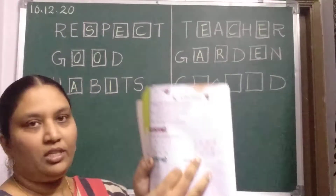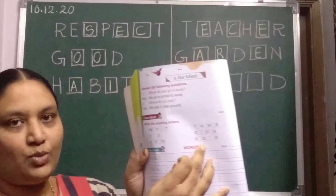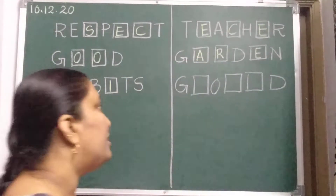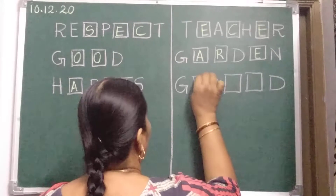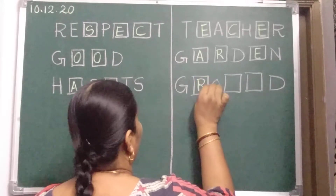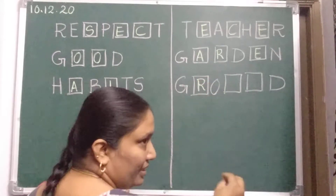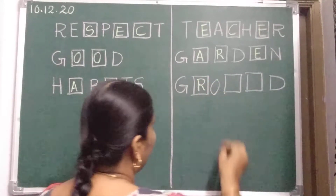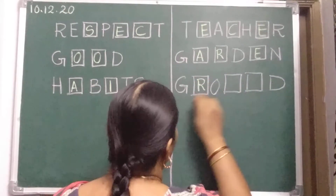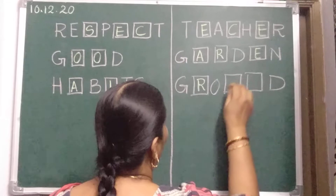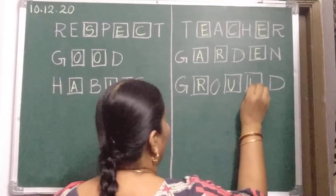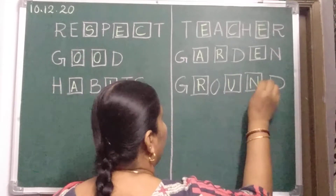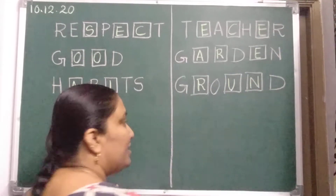This is what? Last word — Ground. Yes, you all like to play in the ground, isn't it? G, R, O, U, N, D. Ground.